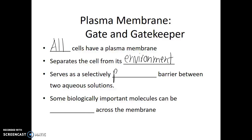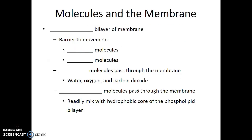This plasma membrane serves as a selectively permeable barrier between two aqueous solutions: the cytoplasm or cytosol within the cell and the environment outside of the cell. Some biologically important molecules can be transported across the membrane if they would otherwise be blocked by this barrier. The plasma membrane is primarily a phospholipid bilayer.